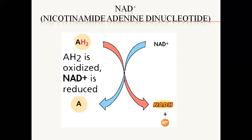In catabolism, breakdowns occur — electrons and molecules are released. Electrons are released through the dehydrogenation process. That will be taken up by NAD. NAD will capture it. When NAD accepts electrons, NAD will be reduced into NADH.